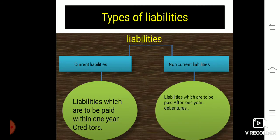Liabilities are also divided into two parts: current liabilities and non-current liabilities. Liabilities which are paid within one year are known as current liabilities — for example, creditors. Liabilities which are paid after one year are known as non-current liabilities — for example, debentures.